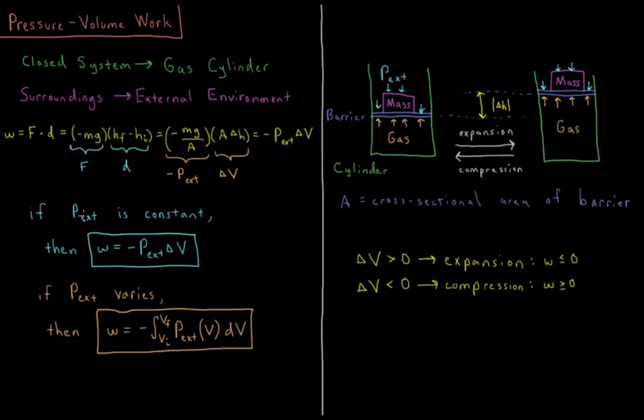So if the external pressure is constant during the entire expansion or compression event, then we get this type of expression. The work is equal to the negative external pressure times the change in volume. But typically the force is not going to be constant. It's usually not going to be as a result of a mass sitting on top of a barrier. Usually it's going to be some external environment, which is another gas, which is exerting pressure on the barrier. So oftentimes the pressure is not going to be constant, but it will vary.